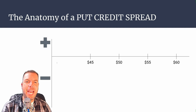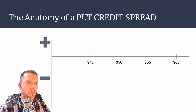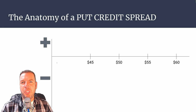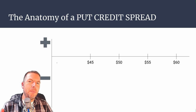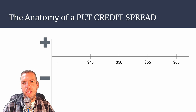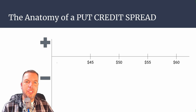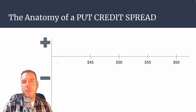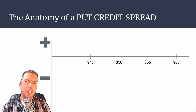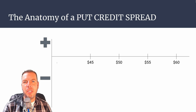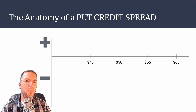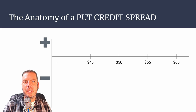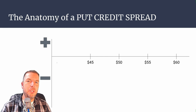Let's talk about the anatomy of a put credit spread. If you're bullish on the market, you could go out and buy a call option, or you could come over and sell a put. Selling a put naked comes with some risk. When you go to the call side and buy a call, a debit comes out of your account. But when you're selling an option to open, you receive a credit — the second you open that trade, that credit drops right into your account.